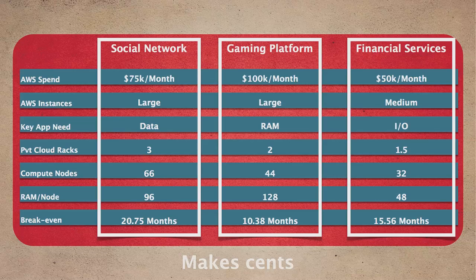Next, a gaming company with a larger spend — $100K a month. They were more RAM intensive; their apps required more RAM. We brought them down to two racks because they weren't IO intensive, and their ROI was 10 months. These are numbers we don't really see out in the field that often. We don't see what the real return is and how much we're actually spending towards the public cloud. We're big fans of the public cloud and want you to continue using it, but there's a use case for both.